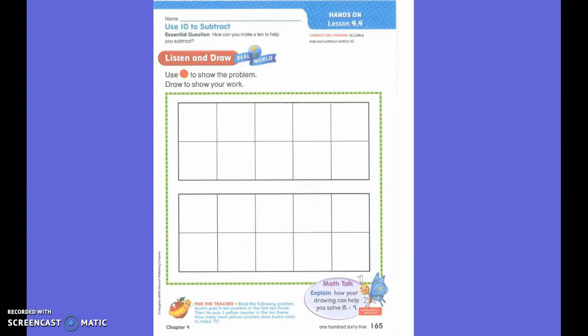So I want you to listen to my story and use your red and yellow crayon to fill out the story as I read it. Are you ready? Yes. Austin puts nine red counters in the first 10 frame. Then he puts one yellow counter in the 10 frame.